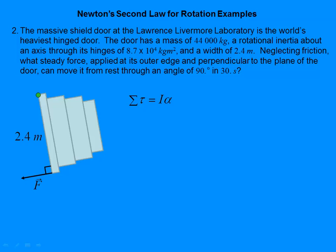Net torque is I-alpha, but we don't know the torque and we don't know alpha — too many unknowns. However, we do know some things about the motion of the door: it starts at rest and moves through a 90-degree angle in 30 seconds with a steady force. Steady means constant, which means kinematic equations apply.